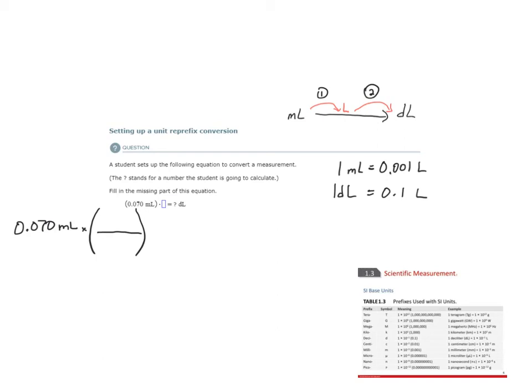So I can express this conversion factor either with one milliliter on top or one milliliter on the bottom. It's just a way to express it. One milliliter is 0.001 liters or 0.001 liters per one milliliter. I want milliliters on the bottom and 0.001 liters on the top because that will allow me to cancel milliliters.